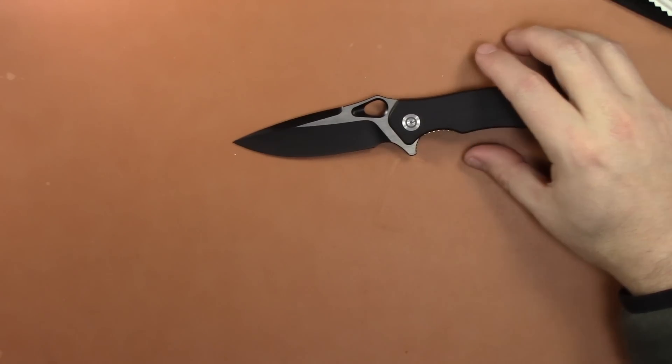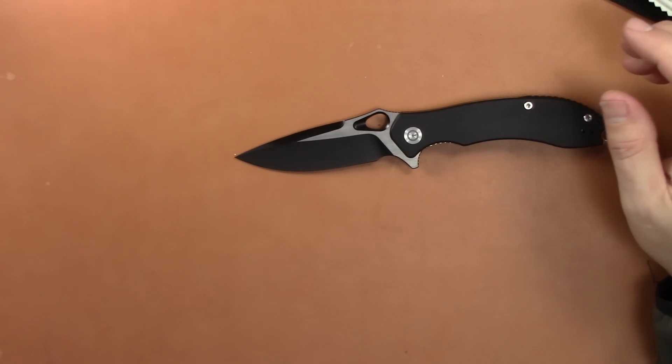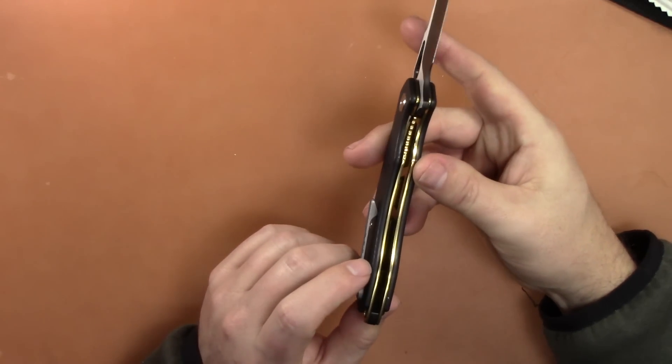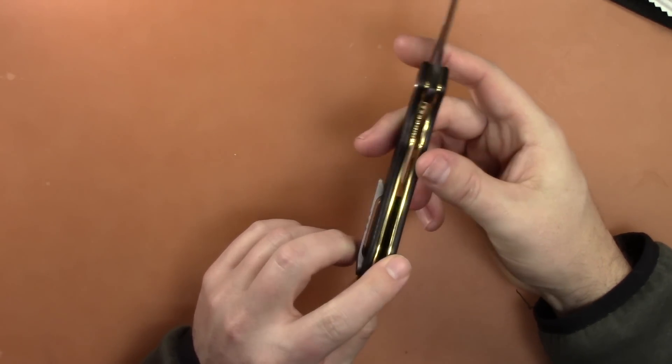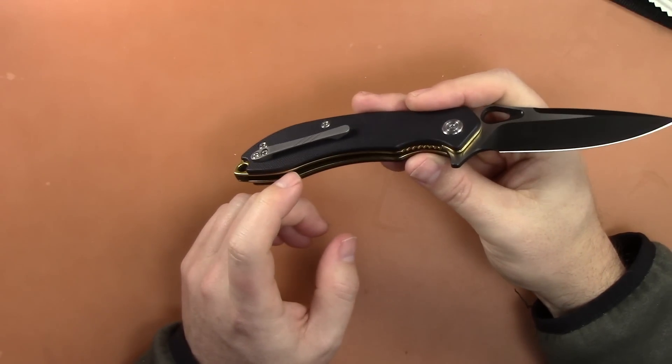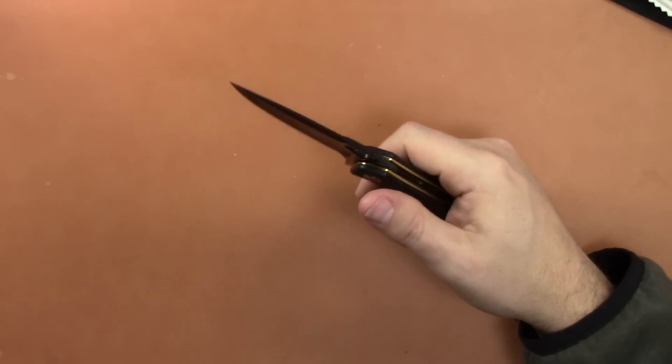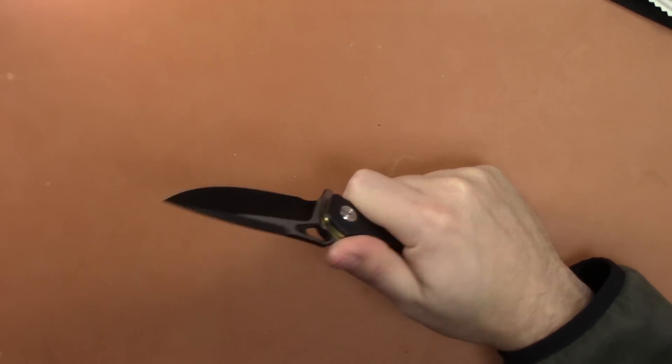G10 on this. And then the weight is 4.1 ounces. It does have stainless steel liners that are anodized a gold color, which is actually really good looking on this knife, I feel, with the black. And they are skeletonized, so they do reduce weight. So it's a pretty good size knife with that 4.85 inch handle.